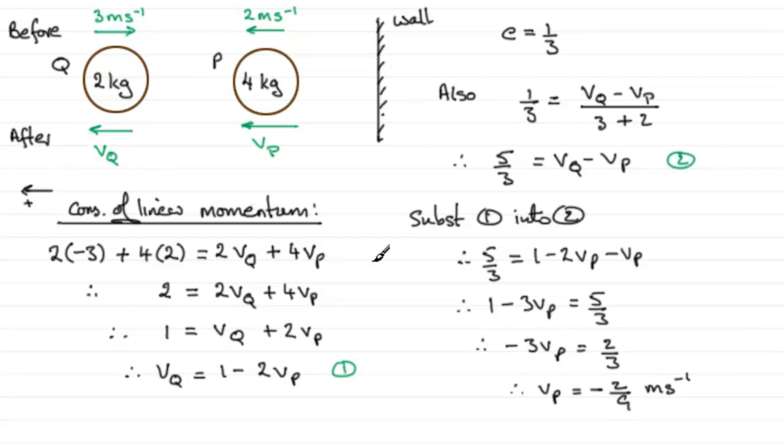So therefore we can see that P reverses direction. It heads back towards the wall, in other words. So therefore it follows that there will be a second impact with the wall.